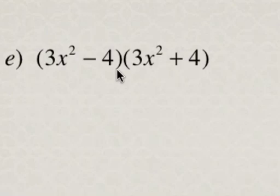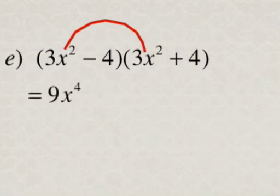So now if we're going to multiply these two binomials, we're going to multiply the first terms. So 3x squared times 3x squared is 9x to the power of 4.